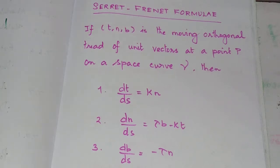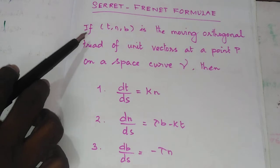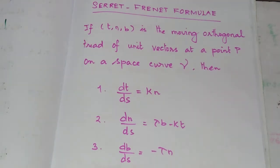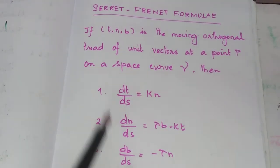Welcome to Blue Mass. In this video about differential geometry, we are going to ask the question of the Serret-Frenet formula. We will use the matrix formula. If TNB is the moving orthogonal triad of unit vectors at point P on a space curve gamma.